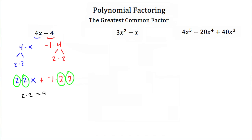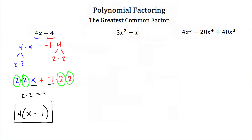When you factor your polynomial, you take the 4 out and put what's remaining inside the parentheses. If I factor out two 2s from 4x, I'm left with x. Then in the second term, I factor out two 2s, or 4, and I'm left with just negative 1. So the factored form of 4x minus 4 is 4 times x minus 1.